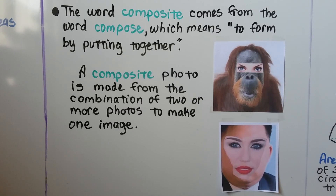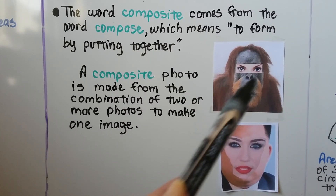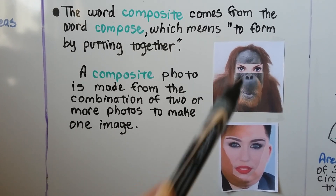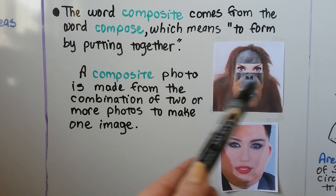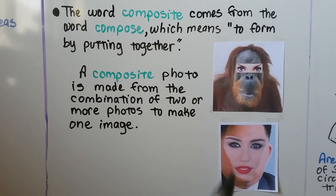The word composite comes from the word compose, which means to form by putting together. A composite photo is made from the combination of two or more photos to make one image. If you've ever used Photoshop to put part of one image onto a completely different image — like making it look like an orangutan really has a woman's eyes — that's a composite photo.